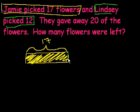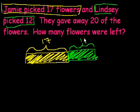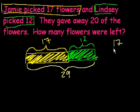So Lindsay's flowers — we're going to combine them. Lindsay picked 12, so that's Lindsay's flowers right there. First of all, how many total flowers did they pick? Well, 12 plus 17 is 29. The total flowers picked is 29: 17 plus 12. 2 plus 7 is 9, so 29.